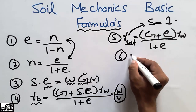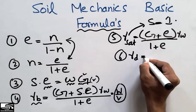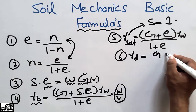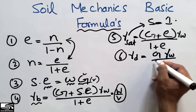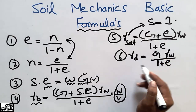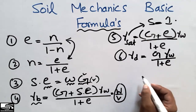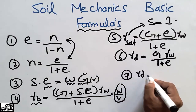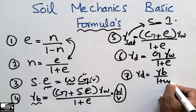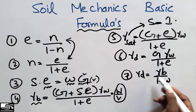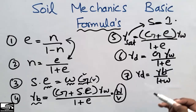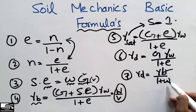The sixth formula gives the dry unit weight: γ_d = G × γ_w / (1 + e). The seventh formula also gives the dry unit weight but in terms of the bulk unit weight: γ_d = γ_b / (1 + w), where w is the water content. So if we are given the bulk unit weight, we can find the dry unit weight by dividing by (1 + w).